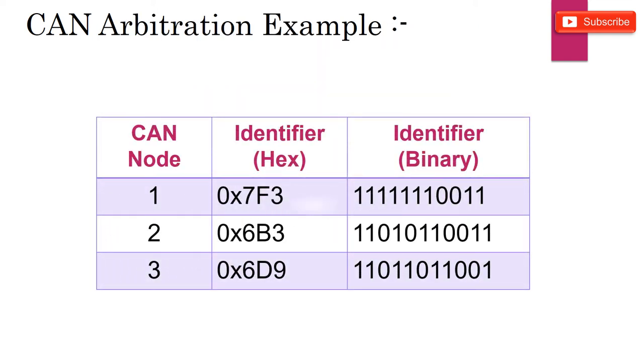Let's take an example. There are three nodes in the network and all three are ready to transmit their messages. Node 1 to transmit a message with message identifier 7F3. Similarly, Node 2 and 3 with their message identifier 6B3 and 6D9 respectively. Its 11 bit binary representation is also shown here.